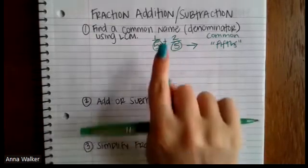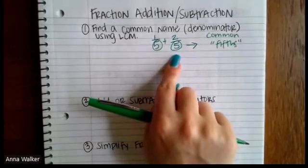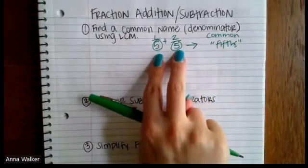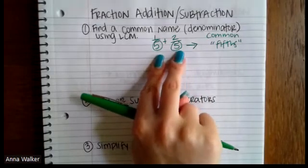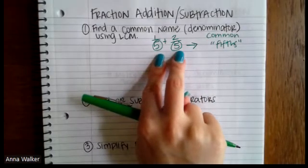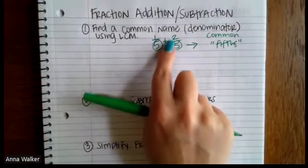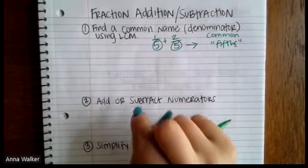So for example, if you had the fraction one-fifth plus two-fifths, they already have a common name. It's fifths. They both have five as the denominator. However, if they don't have a common name or a common denominator, you can use the least common multiple in order to convert your fractions with the common name.